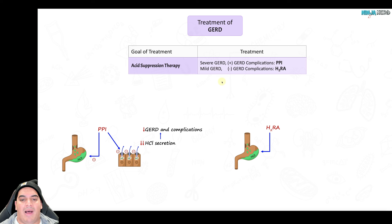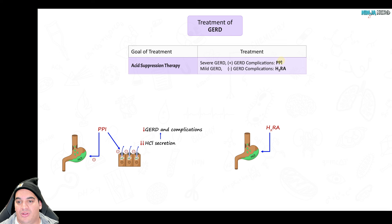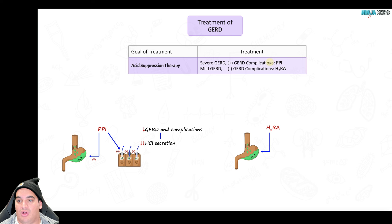For mild GERD — mild heartburn with no esophagitis, strictures, or Barrett's — H2 receptor antagonists (H2RAs) are more appropriate. PPIs can interfere with other drugs by interacting with the cytochrome P450 complex and have been associated with electrolyte abnormalities like hypomagnesemia and C. diff. H2RAs include famotidine and ranitidine; PPIs include omeprazole, pantoprazole, and lansoprazole.